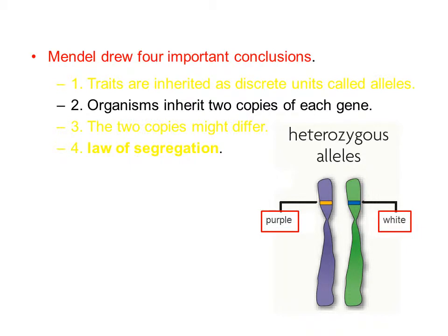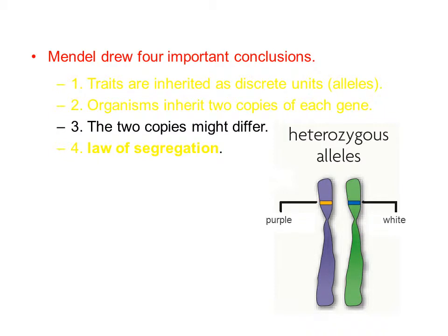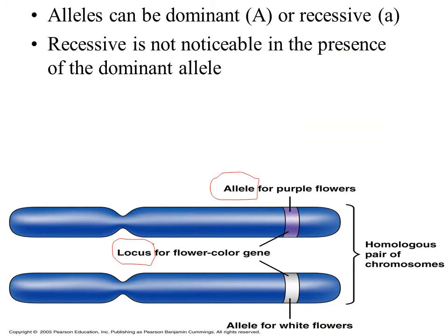Mendel had a second very important conclusion. He suggested that all organisms inherited two copies of each gene. Mendel drew a third very important conclusion — he thought that out of the two copies of each gene that an organism inherits, they might be different. If they are different, that individual would have a dominant allele and a recessive allele, or they could have both dominant alleles, or both recessive alleles. The recessive allele is not noticeable in the presence of the dominant allele.